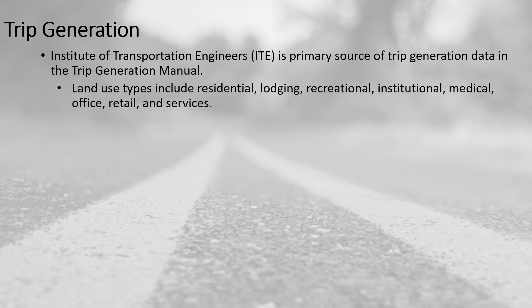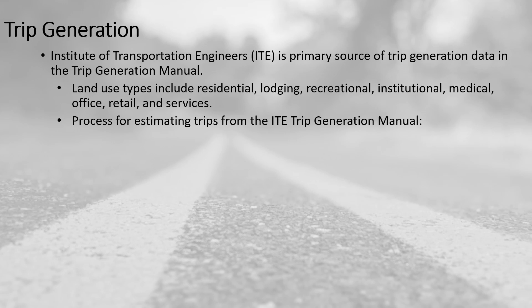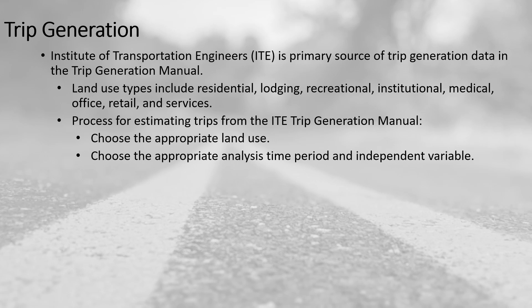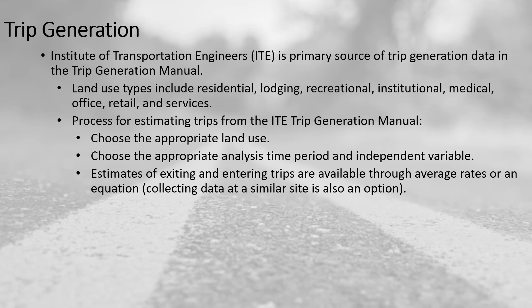It's important to pick the correct type of land use when estimating the trips generated for a proposed facility. The process for estimating those trips includes choosing the appropriate land use, choosing the appropriate analysis time period and independent variable, and developing the estimate of exiting and entering trips through either an average rate or an equation. We also need to keep in mind that collecting local data is a great option if it's available.